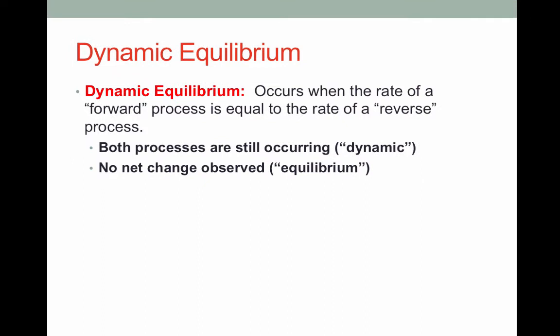To define the term dynamic equilibrium: this occurs when the rate of a forward process is equal to the rate of a reverse process. It's dynamic because both processes are still occurring, but it's at equilibrium because there's no overall net change. A good analogy is population: if the birth rate equals the death rate, the population is in dynamic equilibrium. For every person that dies, someone is born, so the total number never changes, but those people won't always be the same.